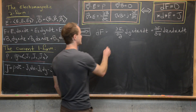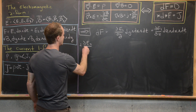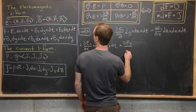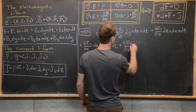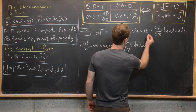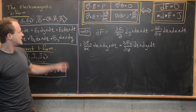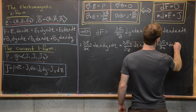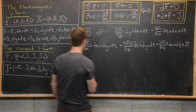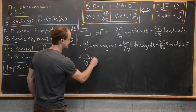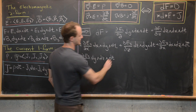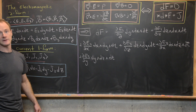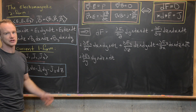From the E2 dy∧dt term, we get: (∂E2/∂x) dx∧dy∧dt + (∂E2/∂z) dz∧dy∧dt. From the E3 dz∧dt term, we get: (∂E3/∂x) dx∧dz∧dt + (∂E3/∂y) dy∧dz∧dt. Note we don't need the partials of E3 with respect to z or t, because wedging those into dz∧dt gives zero.